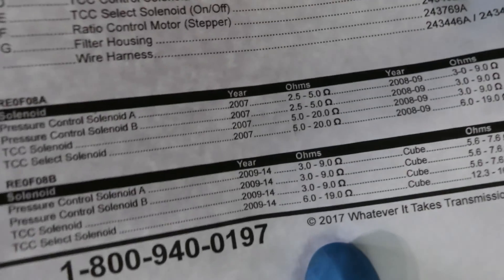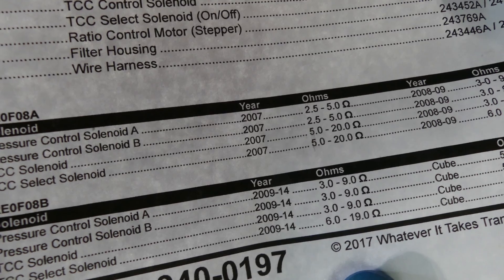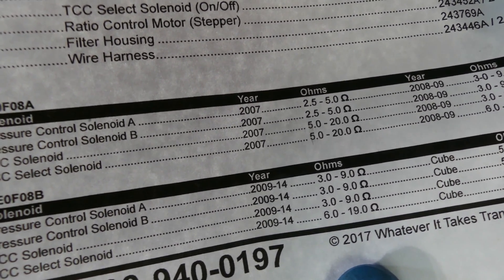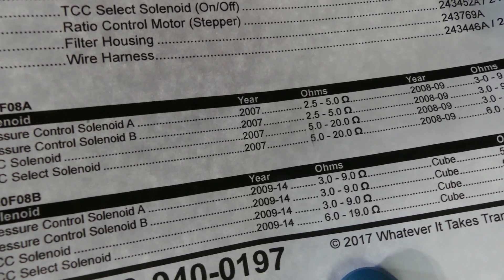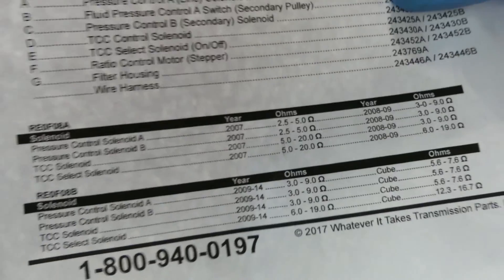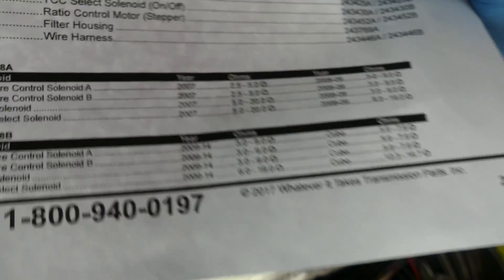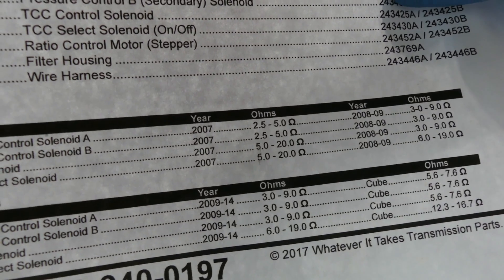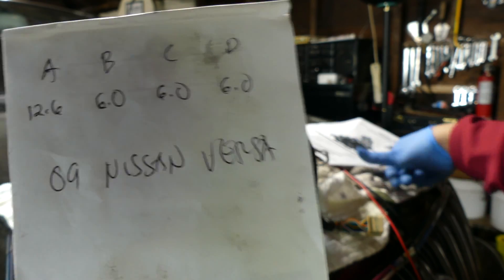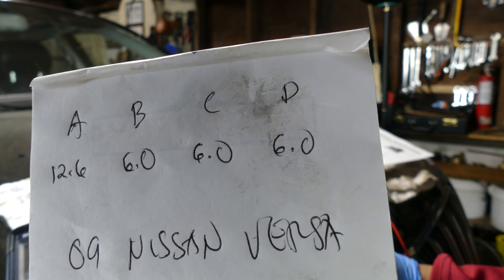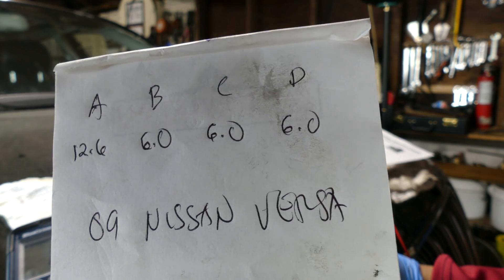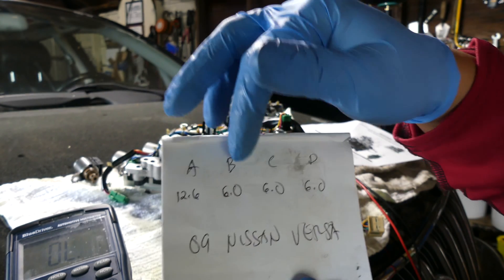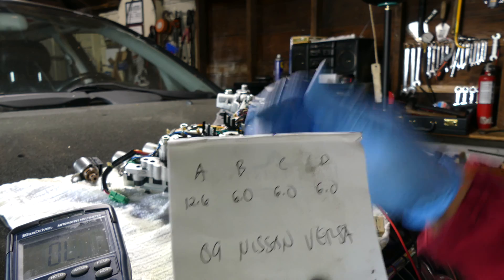But on the other solenoid you can check, they're all almost the same, 3 to 9 for the solenoid B and solenoid C. But on solenoid D it should be between 6 to 19, and as we can see it's all 6 on B to D, so they're all good. I mean from solenoid B to solenoid D, but solenoid A, it's no good, it has a high resistance.